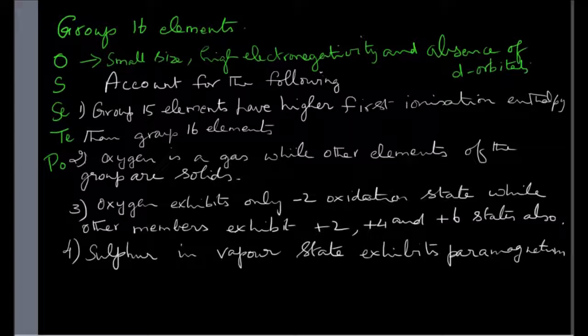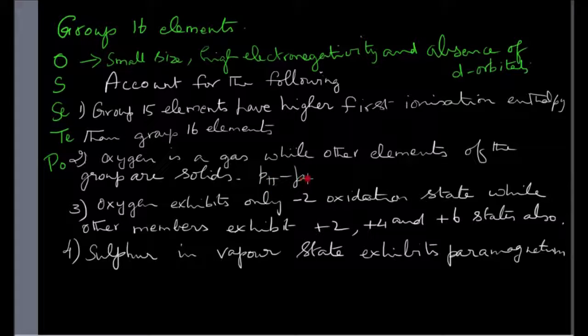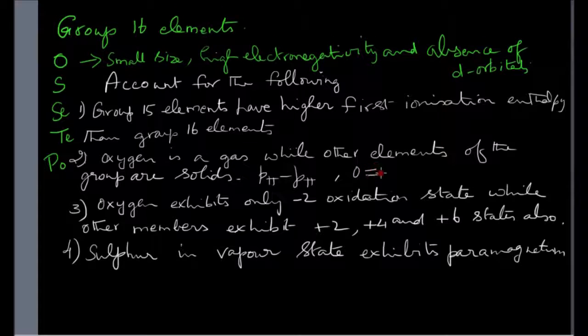Here it is oxygen but the reason is the same. Oxygen being a small element forms P pi P pi bond. It can fuse its P orbitals to form pi bond. So we call it P pi P pi bond and it exists as O double bond O.